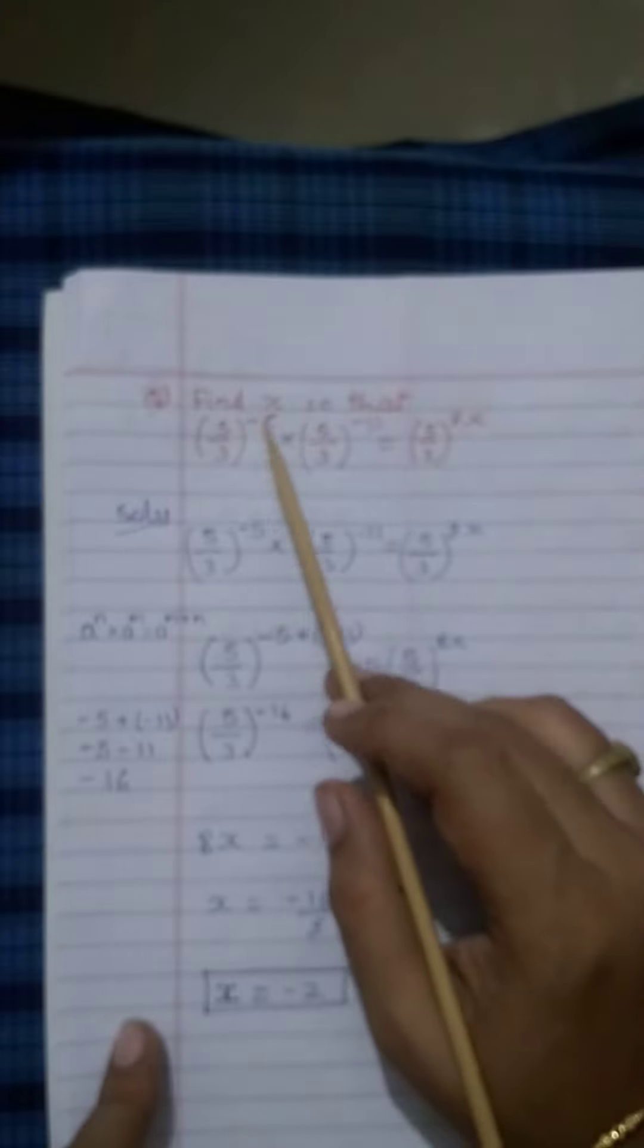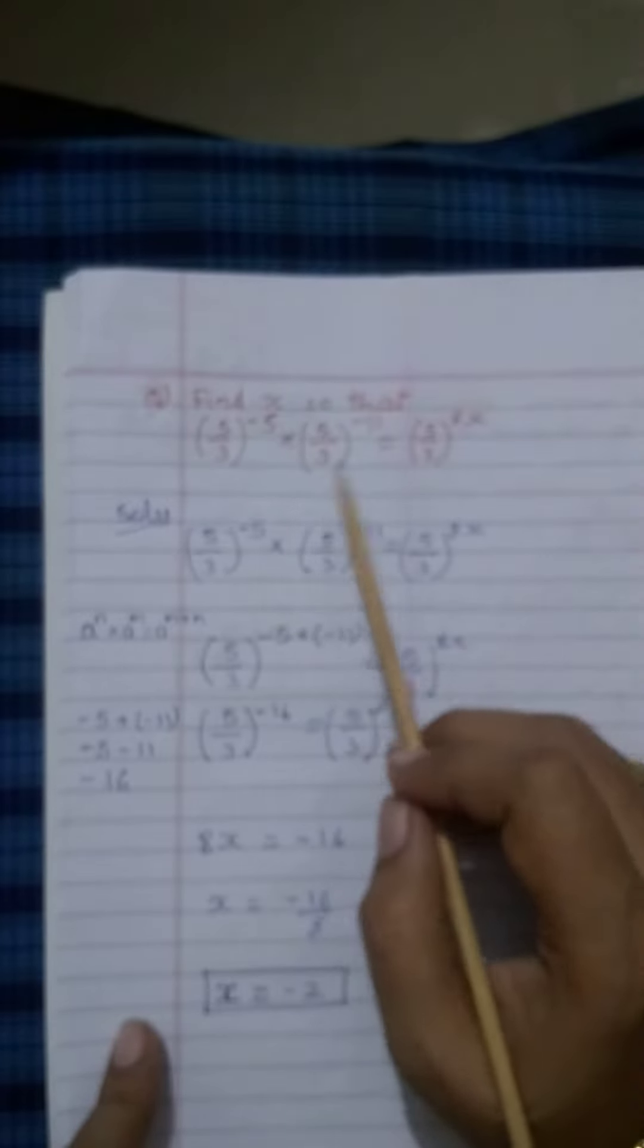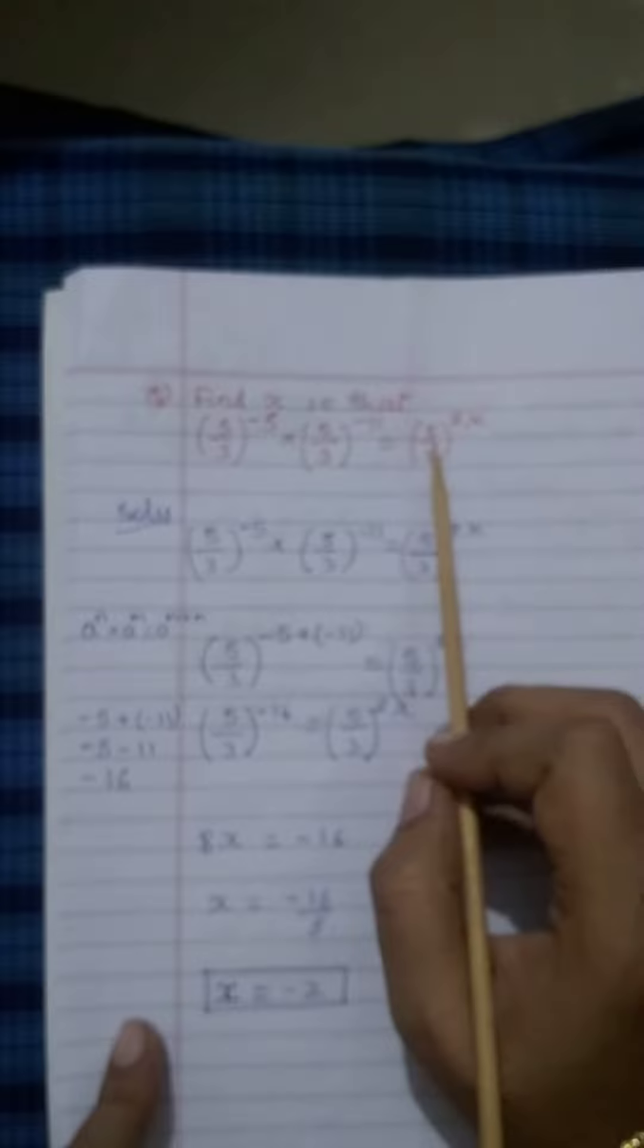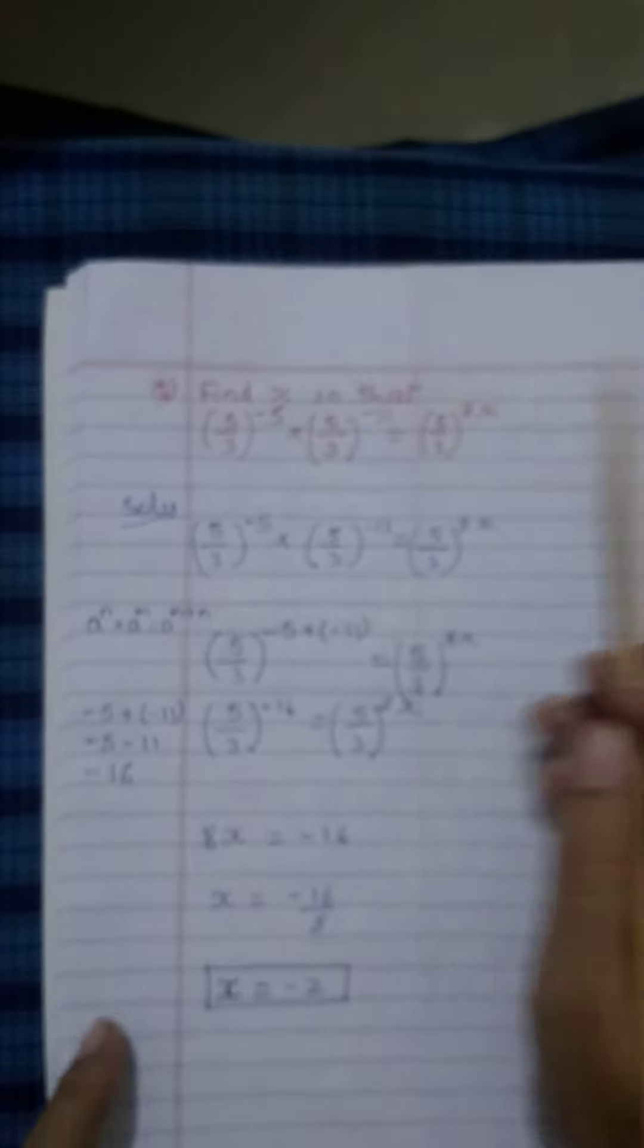So find x so that 5 by 3 raised to minus 5 into 5 by 3 raised to minus 11 is equal to 5 by 3 raised to 8x.